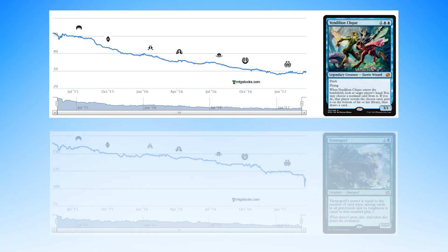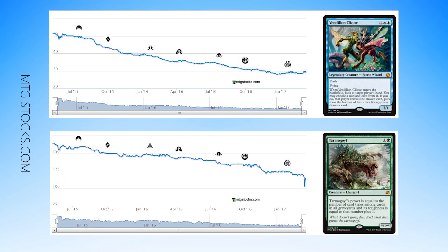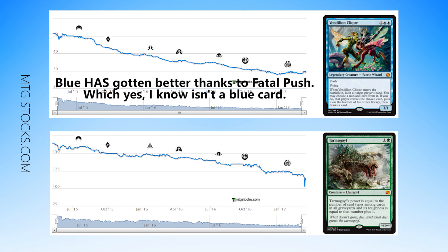Let's look at these two graphs of Vendilion Clique and Tarmogoyf. Both of them are cards that there were a pretty limited amount of, but then got reprinted. Both of these cards also had something else going on with them. After Splinter Twin was banned, blue just became pretty darn bad, and has just been bad for a while in modern. You pretty much shouldn't be playing blue unless it's like blue in infect.